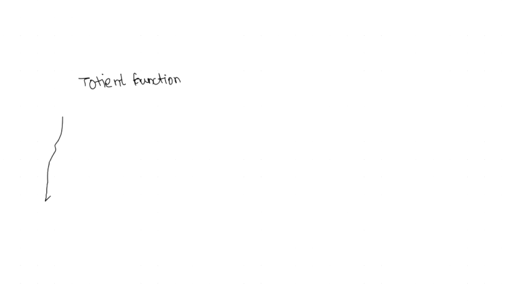So this number, which is the number of co-prime numbers, is actually a well-known function. This is known as the totient function, and it was first given by Euler.